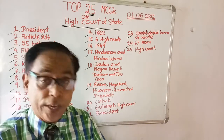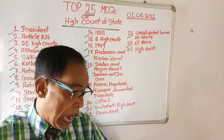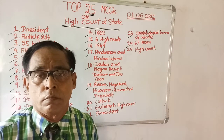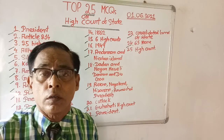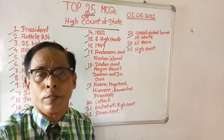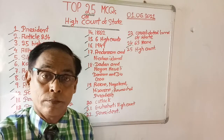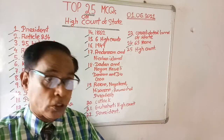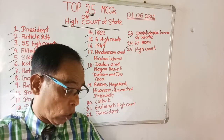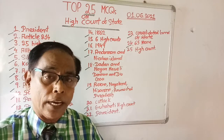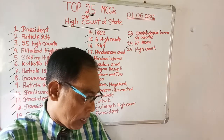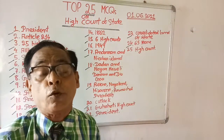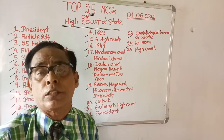Question number twenty-three: expenses of the High Court are charged from which fund of the state? All expenditures of the High Court come from which fund? Options are: Consolidated Fund of the state, Chief Minister's Fund, Contingency Fund of the state, and Governor's Fund. The right answer is the Consolidated Fund of the state — expenses of the High Court come from the Consolidated Fund of the state.